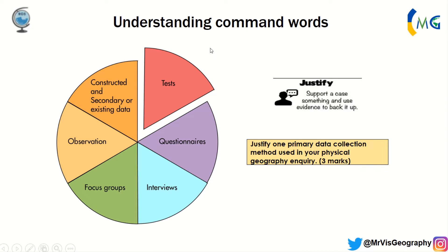'Justify' tends to ask for a little bit more thinking, so you get a few more marks. For example: justify one primary data collection method used in your physical geography inquiry. That's fieldwork-based at Key Stage 4 and 5. You have to pick one primary data collection method — such as observation, questionnaires, interviews, or focus groups — and to justify it, you need to support a case, back it up, and explain why you chose that method and how it was useful.